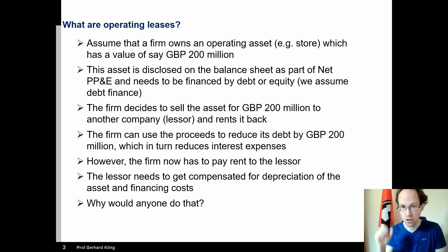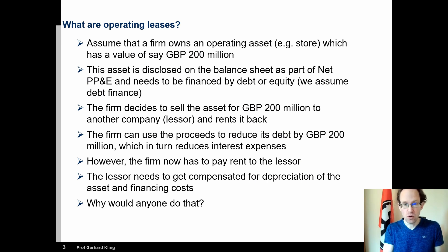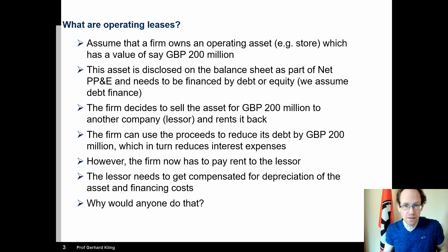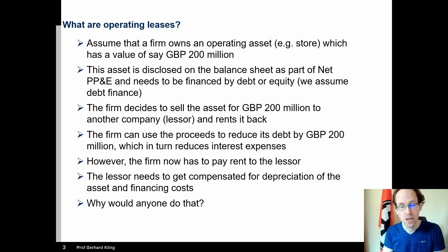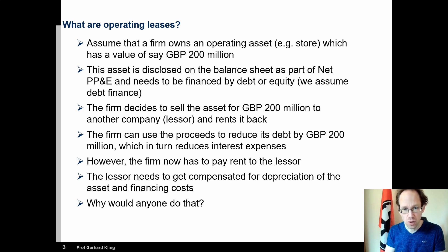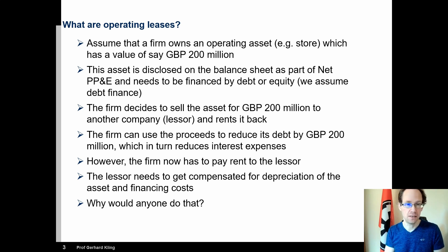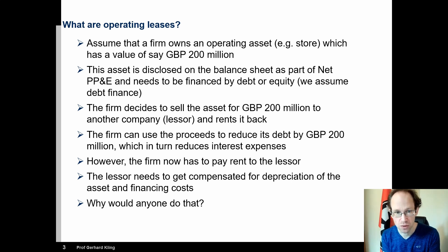The focus here is on the perspective of operations — not the legal perspective, not the accounting perspective — and that's actually very important in this context. Once you have an operating asset like a store, it would be part of your net property, plant and equipment, and it has to be financed: either backed by some debt or some equity. Now, the company could decide they don't really want to own the store — they only want to operate in it while another company owns it. They can arrange this through a so-called operating lease.